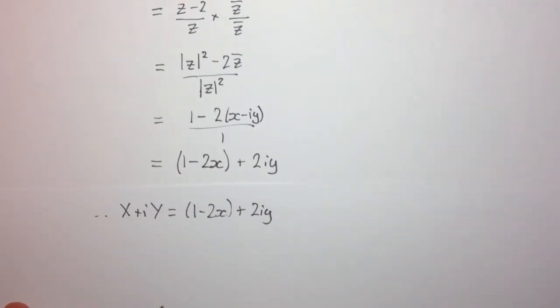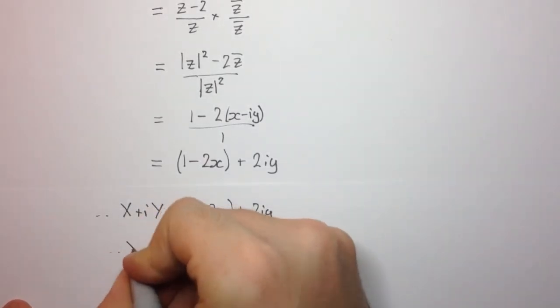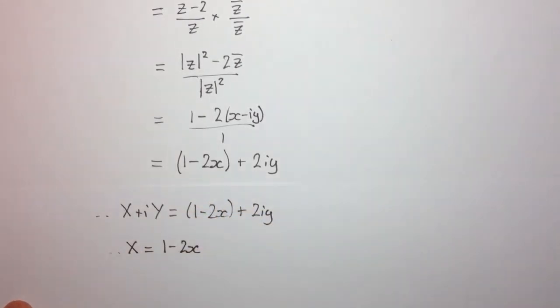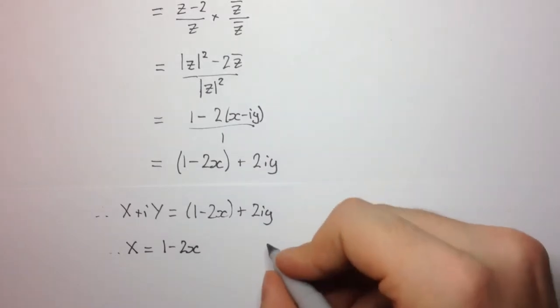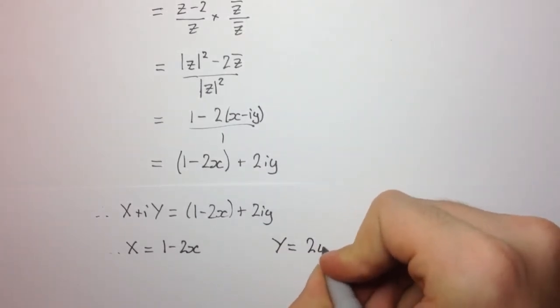Now, we can equate real and imaginary parts. So therefore, we can say that capital X equals 1 minus 2x, and capital Y equals 2y.